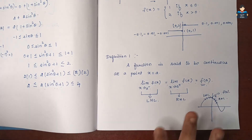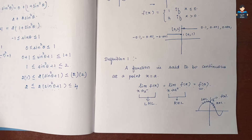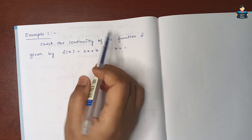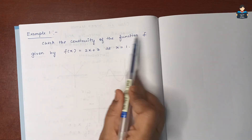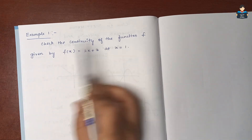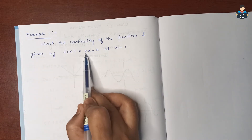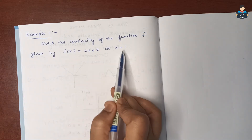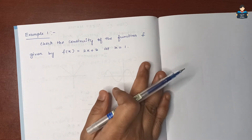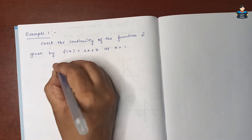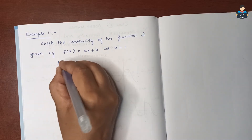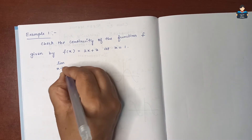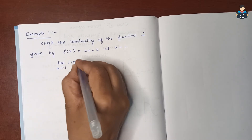Example: check continuity of f(x) = 2x + 3 at x = 1. We find the limit as x tends to 1 of f(x).